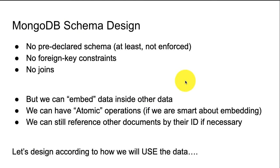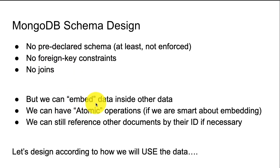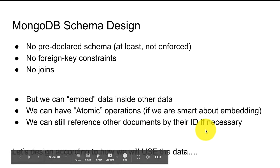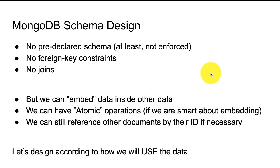To sum up: there's no pre-declared schema in MongoDB, no foreign key constraints, and no joins inside our database. But we can embed data inside other data — kind of joining it that way. We can have atomic operations if we're smart about embedding, like putting comments inside the blog post. And we can still reference other documents by their ID if we need to. You have to have a good reason for it — you can't just design it like SQL based on the data you have. You have to design it based on how you're going to use the data. That is MongoDB in a nutshell.